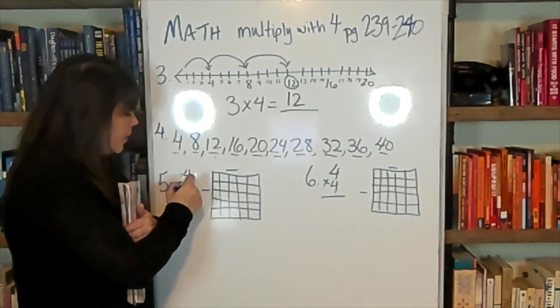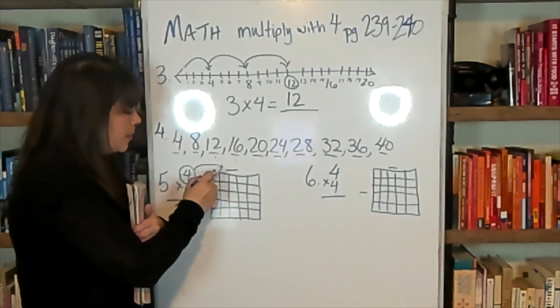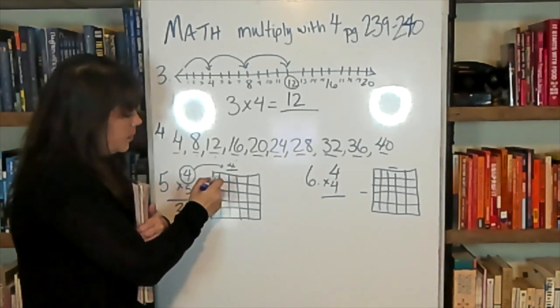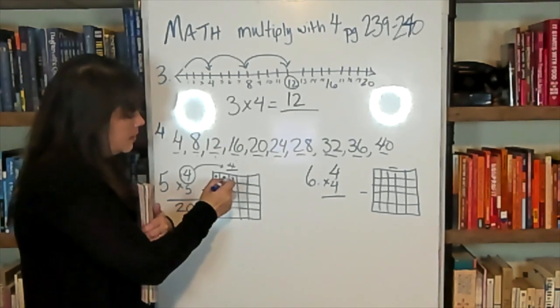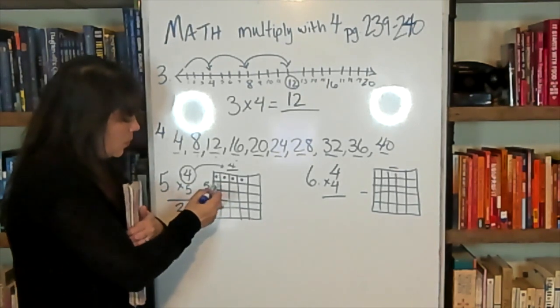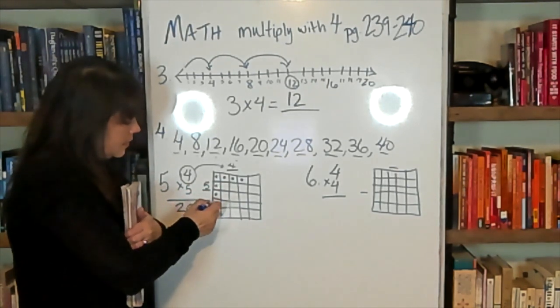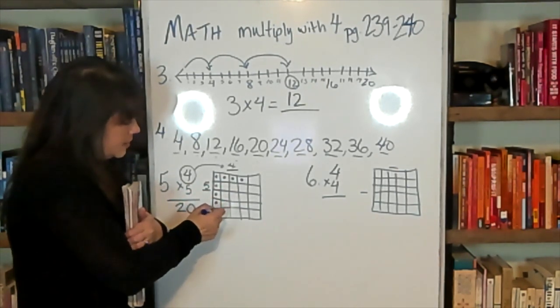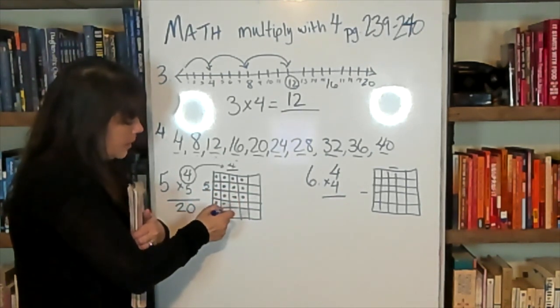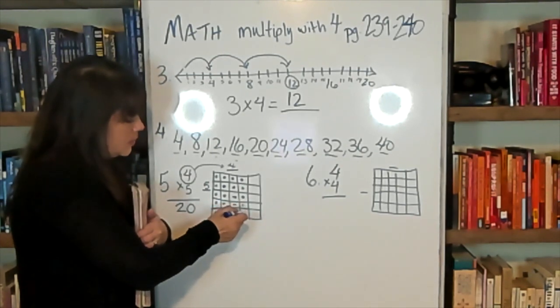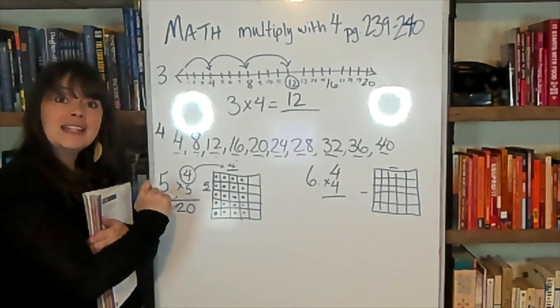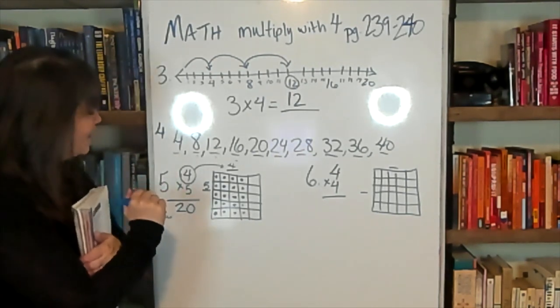We'll take this top number in our multiplication problem and put it here at the top of our box. 4. And we'll do 4 dots. 3, 4. And the second number we'll put here on the side. And we'll have 5 dots. And now you just fill in all the way through. And this is also telling you your answer. If you wanted to sit and count every single one of those dots, you would get 20 dots.